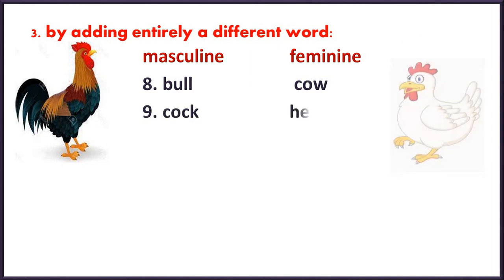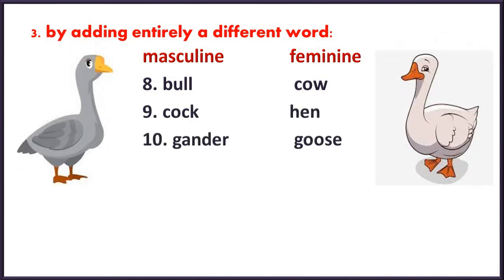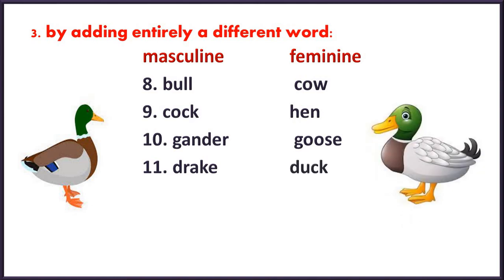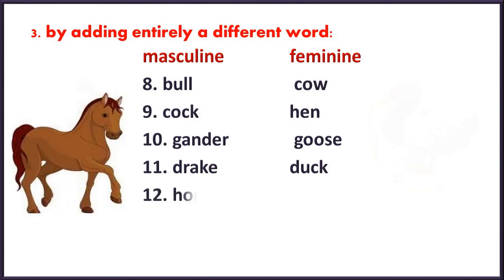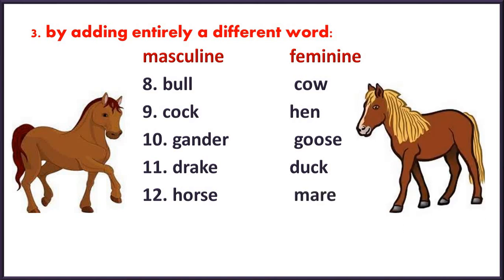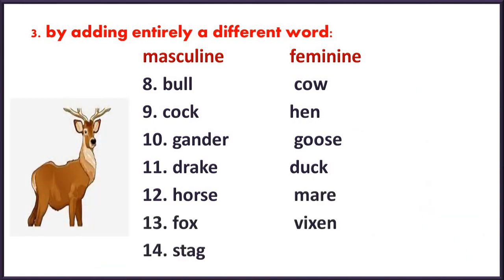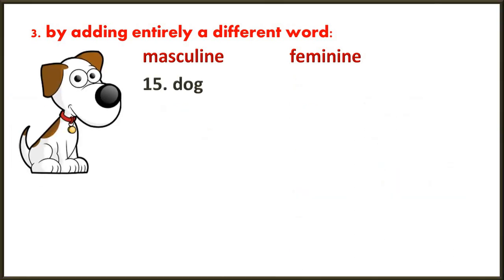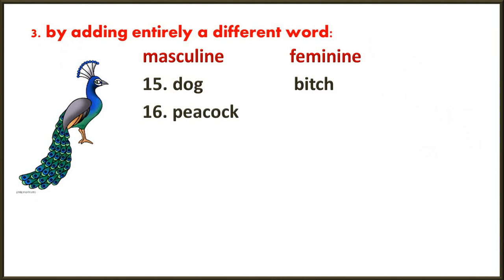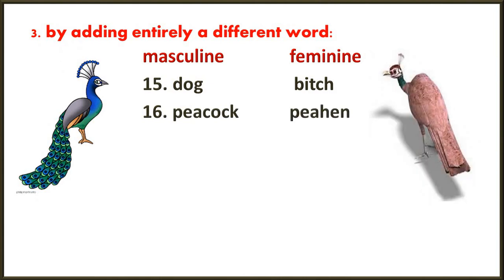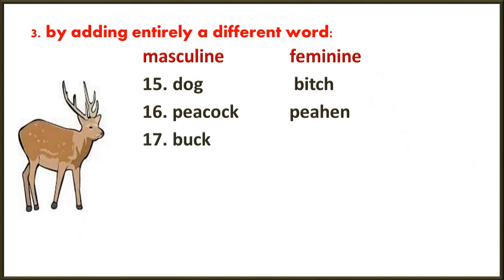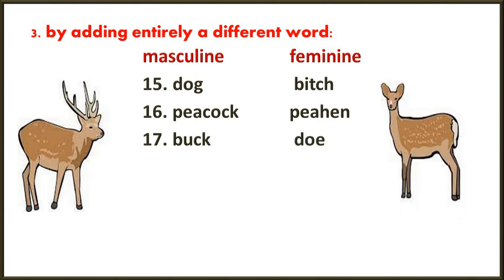Continuing with entirely different words for animals: bull / cow; cock / hen; gander / goose; drake / duck — drake is male and duck is female; horse / mare; fox / vixen; stag / hind; dog / bitch; peacock / peahen — the peacock has beautiful colourful feathers but the peahen does not; buck or deer / doe — both buck and deer refer to the male, and doe is the feminine, so both are correct.